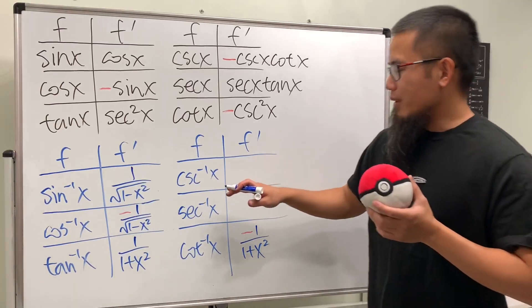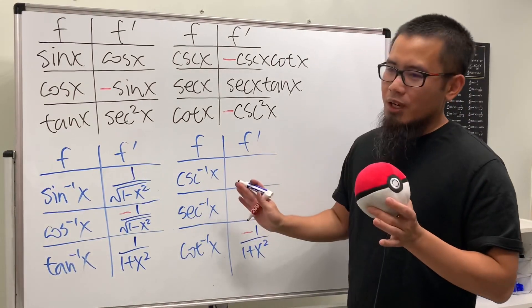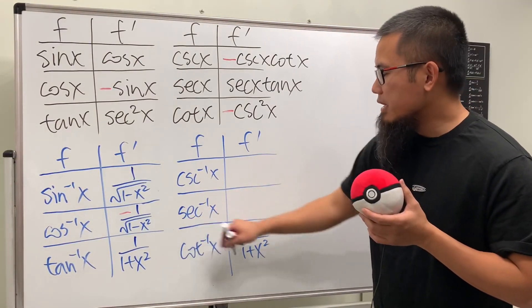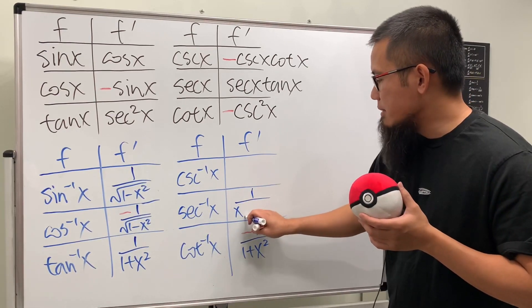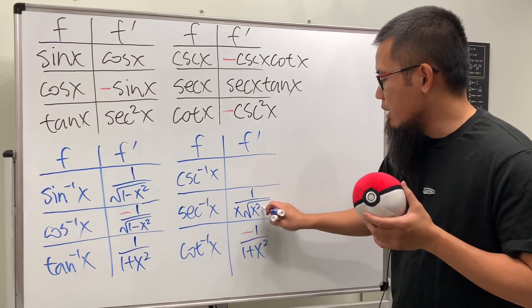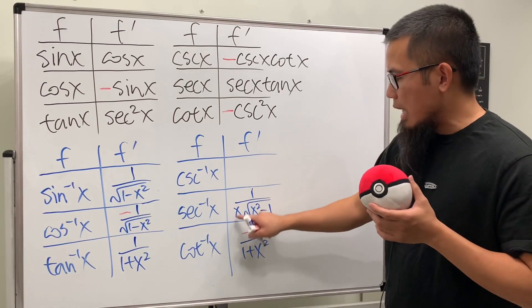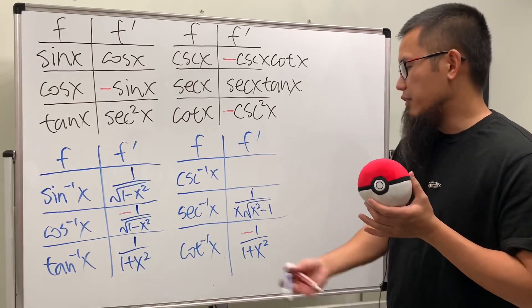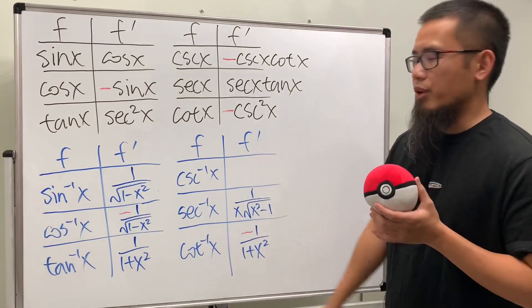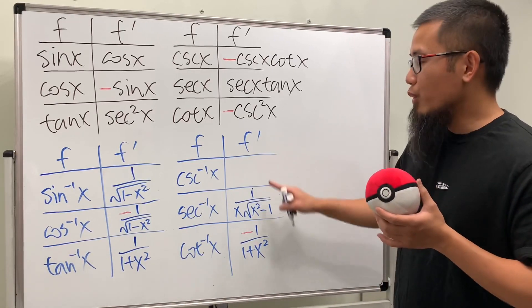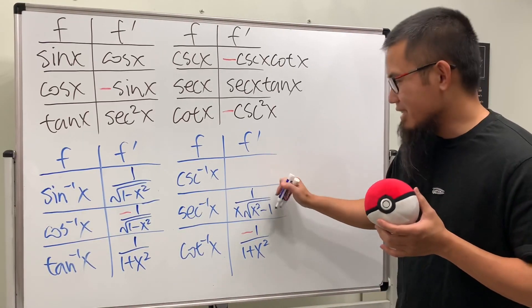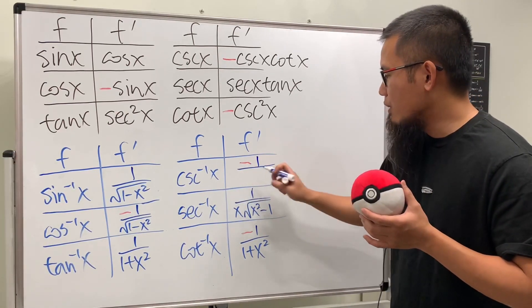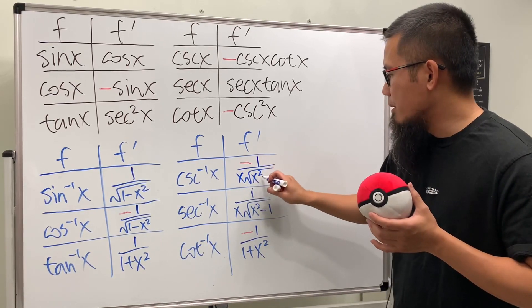For inverse secant and inverse cosecant, they're not as common, but here are their derivatives. The derivative of inverse secant x is 1 over x times the square root of x squared minus 1. Some people include an absolute value — it depends on the domain — but writing it this way is fine. And the derivative of inverse cosecant x is the negative of that: negative 1 over x times the square root of x squared minus 1.